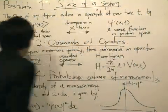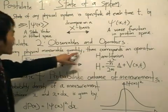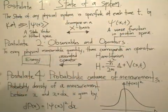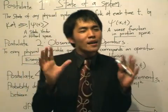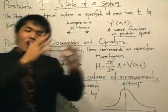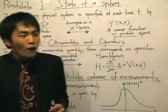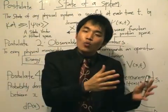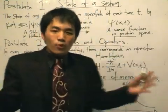Postulate number 2: Observables and operators. To every physical measurable quantity, there corresponds an operator. Now let's bring in some classical mechanics analogies for us to really understand what this is all about. If you've got a car and you've got the equation of the position x, what do you do if you want to get the speed?